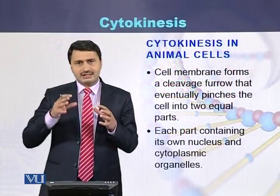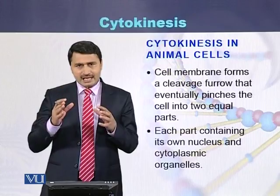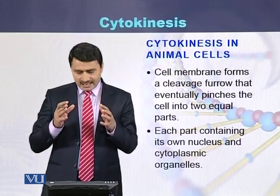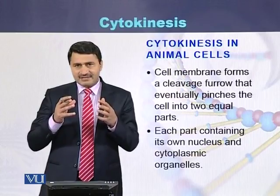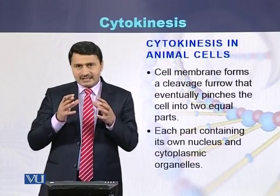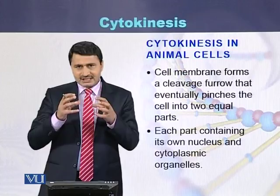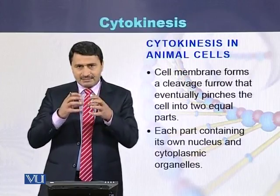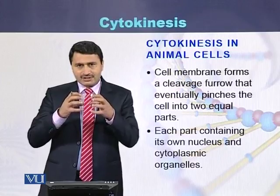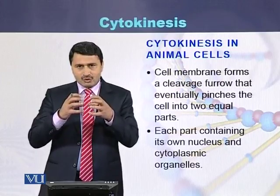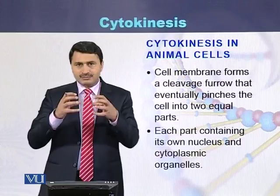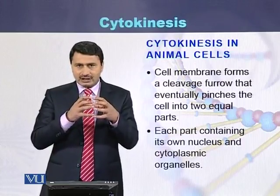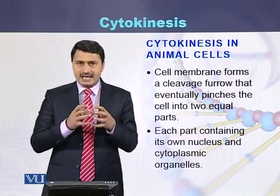Cytokinesis differs between the animal cell and the plant cell. In the case of the animal cell, there is a cleavage furrow. That cleavage furrow pinches the membrane of the cell and ultimately converts a single cell into two cells, each part containing the nucleus as well as other organelles of the cell.